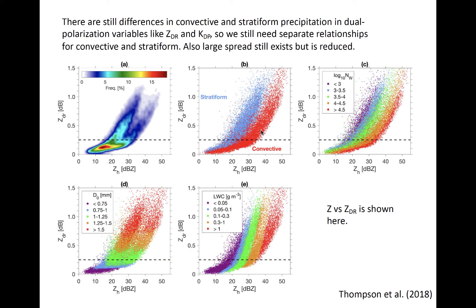Spread is still present in rain rate even when using dual-pole relationships to estimate rainfall. Separate dual-pole relationships can be computed for convective and stratiform echo as well, which helps to constrain the uncertainty.